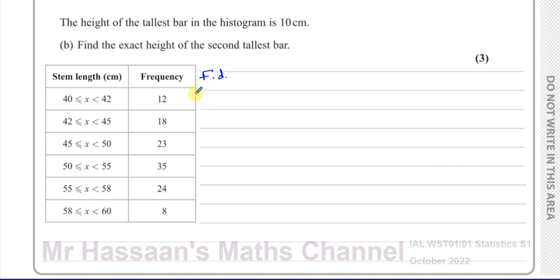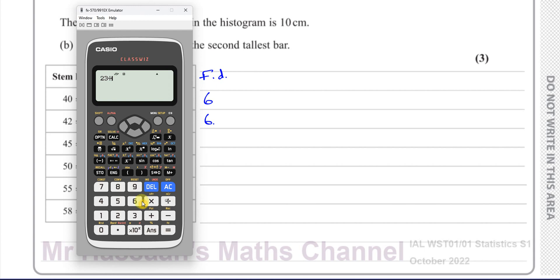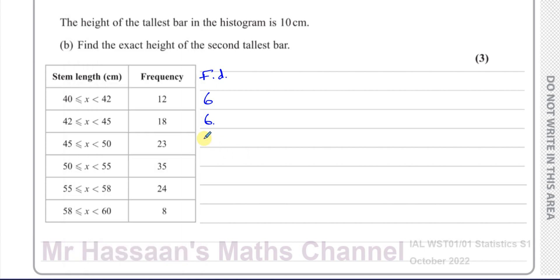The frequency density is the frequency divided by the bar width. There are no gaps in the limits, so we use the class widths directly. Computing each: 12 ÷ 2 = 6; 18 ÷ 3 = 6; 23 ÷ 5 = 4.6; 35 ÷ 5 = 7; 24 ÷ 3 = 8; 8 ÷ 2 = 4. So the highest frequency density is 8 (the 55–58 class) and the second highest is 7 (the 50–55 class).